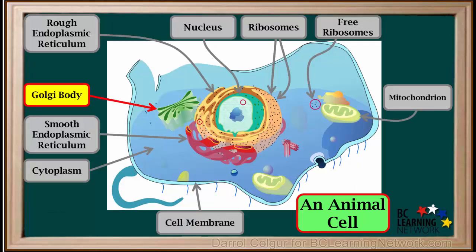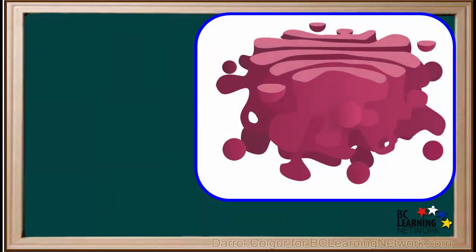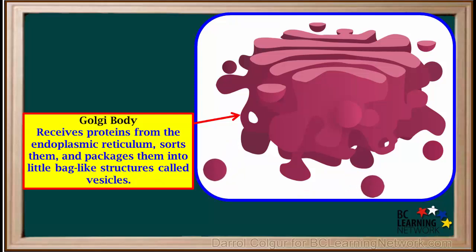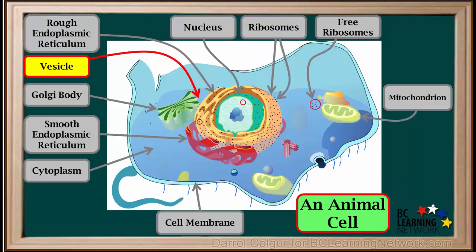The next organelle we'll look at is called the Golgi body. Taking a closer look, we see that it is surrounded by folded membranes. The Golgi body, which is also called the Golgi apparatus, receives proteins from the endoplasmic reticulum, sorts them, modifies some of them, and packages them into little bag-like structures called vesicles, which break off of the structure and go into the cytoplasm. Vesicles are little structures that detach from the Golgi body and enter the cytoplasm. The type of vesicles produced by the Golgi body are called transport vesicles, because they transport materials, such as proteins, to other parts of the cell.